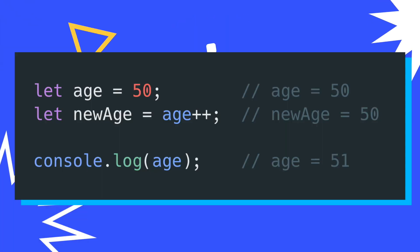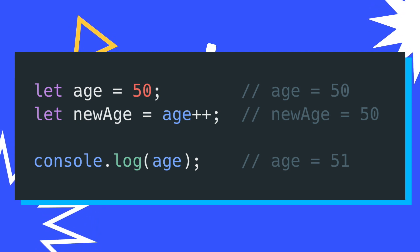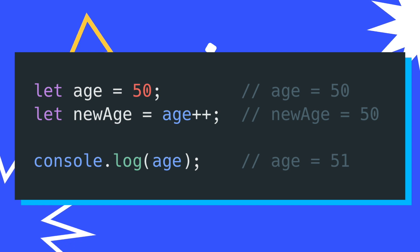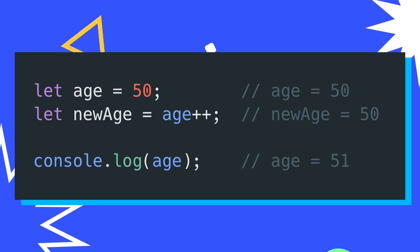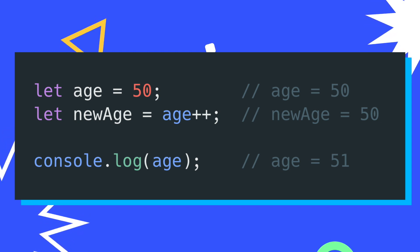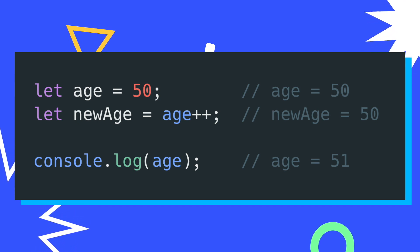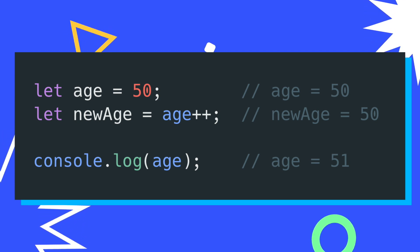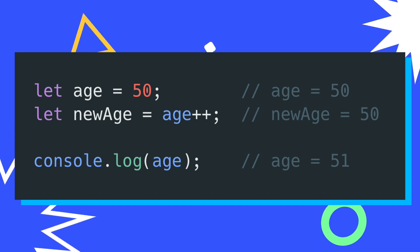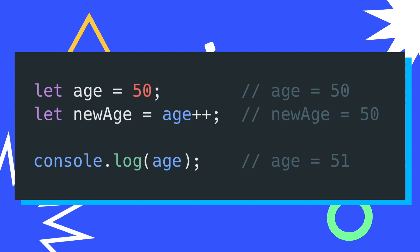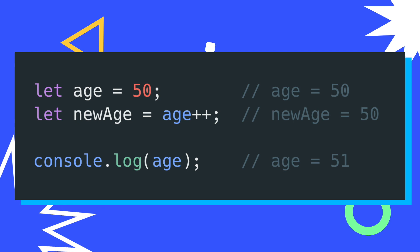Let's walk through a couple of examples. Here we can see that I have the variable age assigned to the value of 50. After that, I create a new variable called new age, which is assigned to the age variable with the increment operator appended to it. As you can see in the comments, the value that's actually assigned to new age is 50 instead of the maybe expected 51. This happens because with the operators as a postfix, the variable's value doesn't change until the very next line. That's why when we print out age at the end, it now has the expected value of 51.